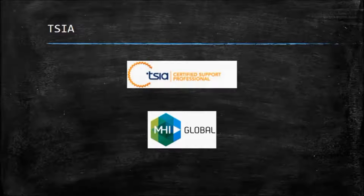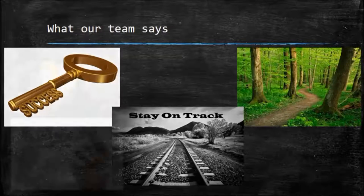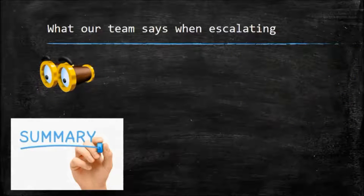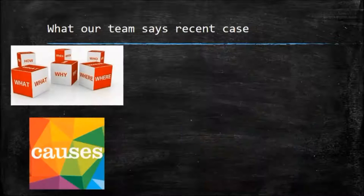Understanding the problem is so important it's covered in three of the 14 modules used in the TSIA Certified Support Professional training classes. In a recent round of refresher training, two escalation team members had keen insights. The first said the problem statement is key to solving the case — it keeps you on track and provides the path forward. Another spoke about escalating to development: development needs to see at first glance a summary of the problem to get it to the correct individual. Having incomplete or incorrect information delays development response time and is inefficient, not to mention frustrating for them.